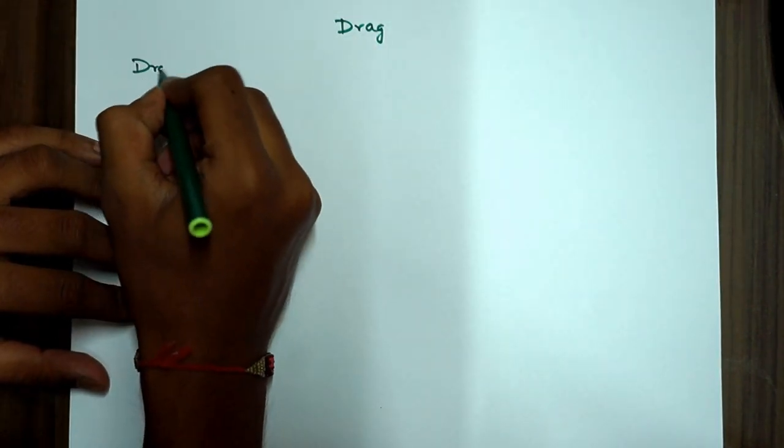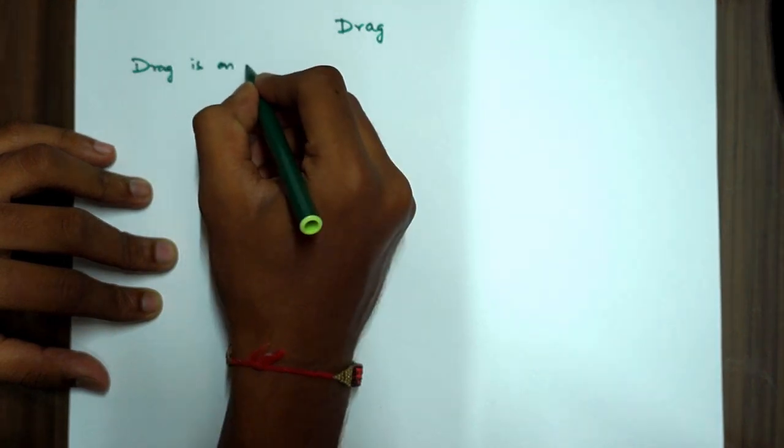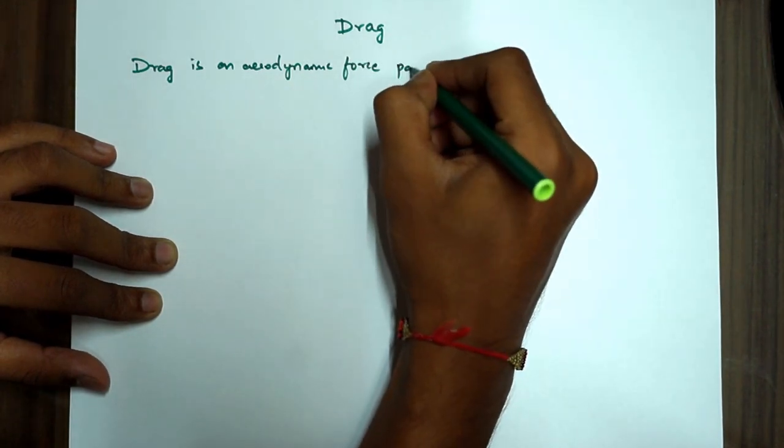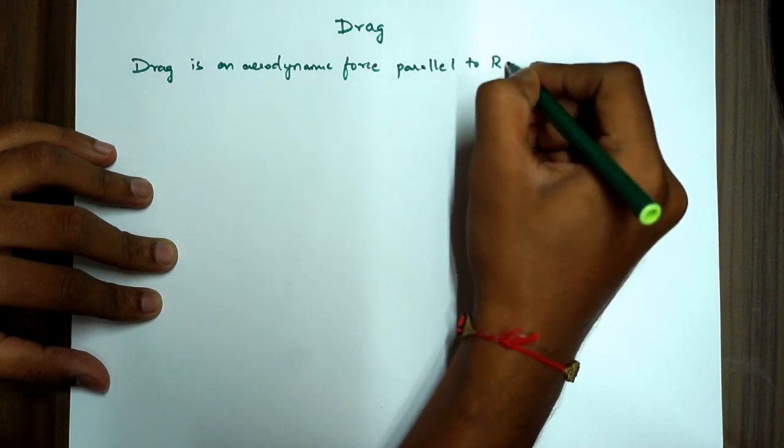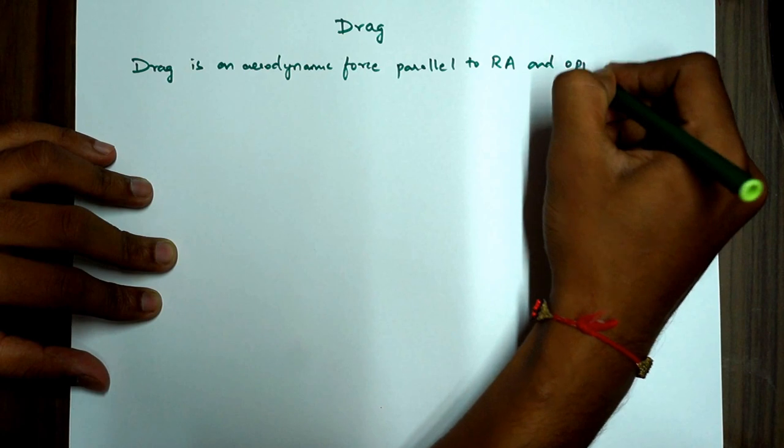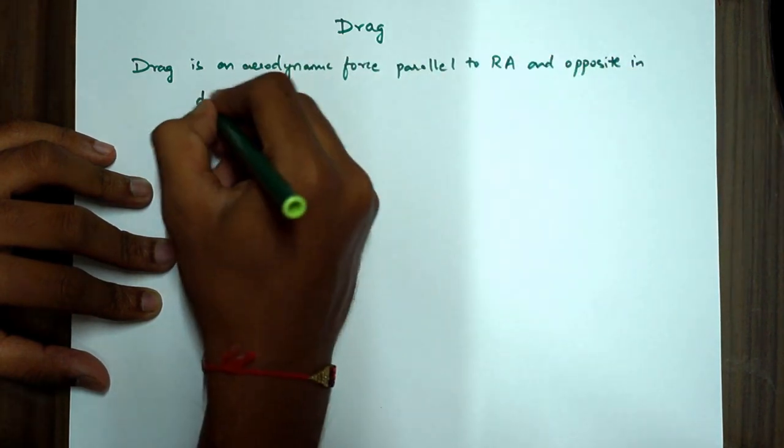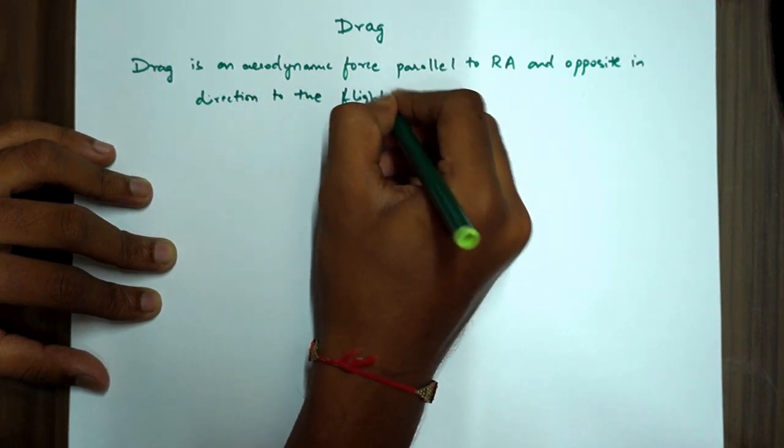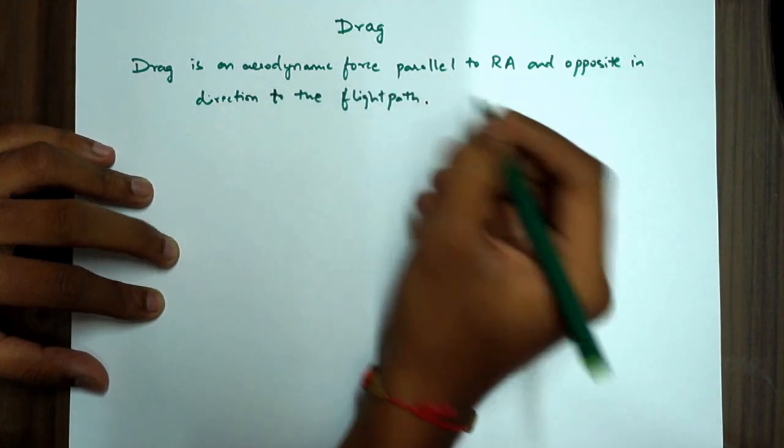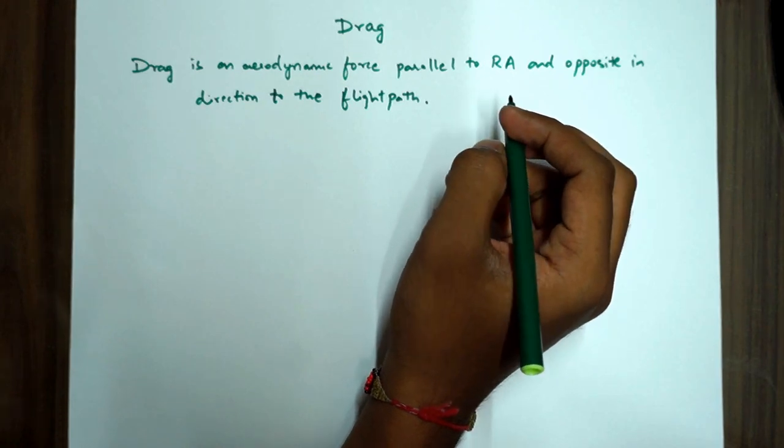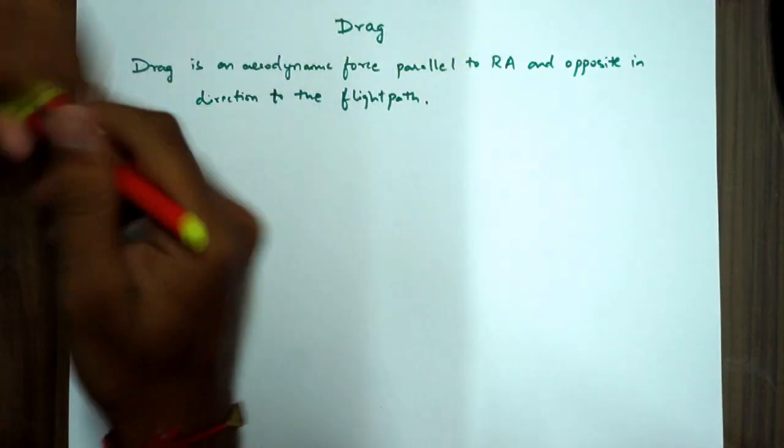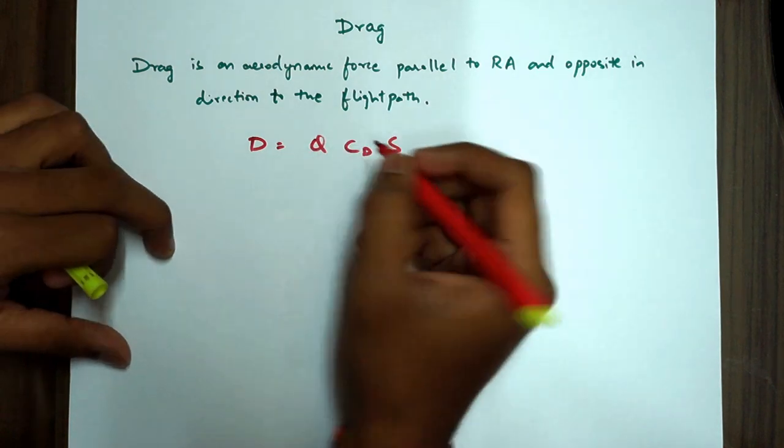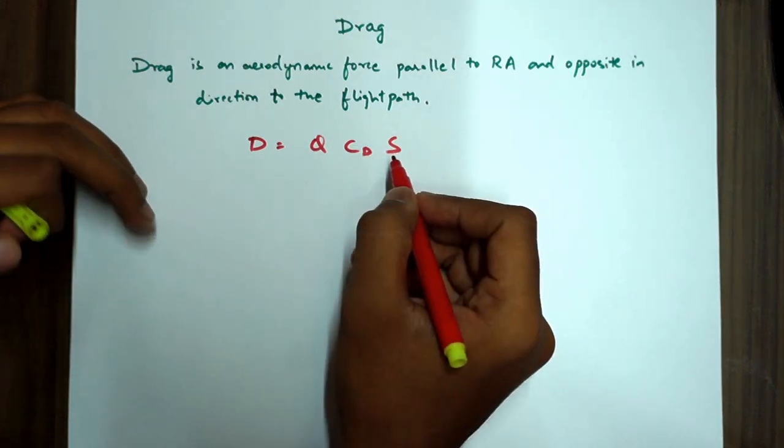What is basic drag? Drag is an aerodynamic force, force parallel to relative airflow and opposite in direction to the flight path. This is drag, basic drag equation, drag definition. And formula for drag is it's a product of dynamic pressure, coefficient of drag and the surface area.